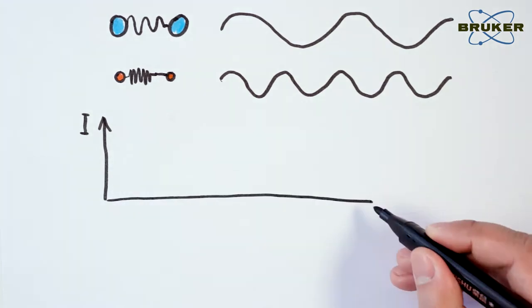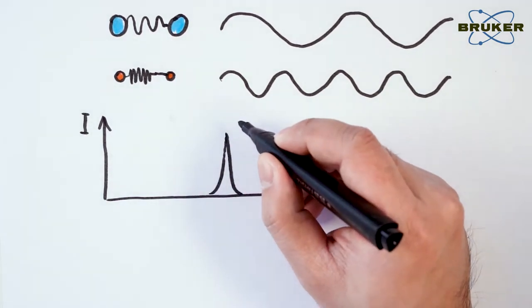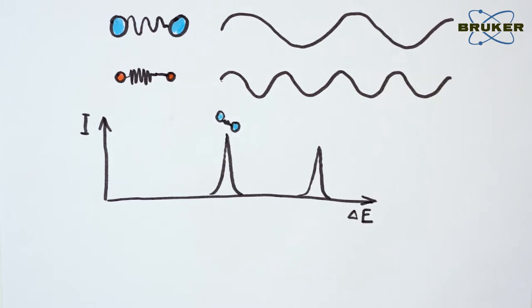The exact same thing happens with molecular vibration. Let's look at two very simple molecules, oxygen and nitrogen. Oxygen has more mass and therefore a lower frequency than nitrogen.